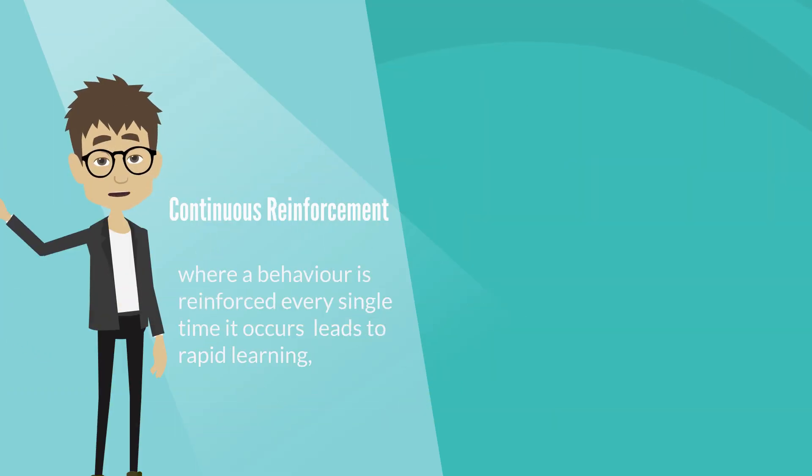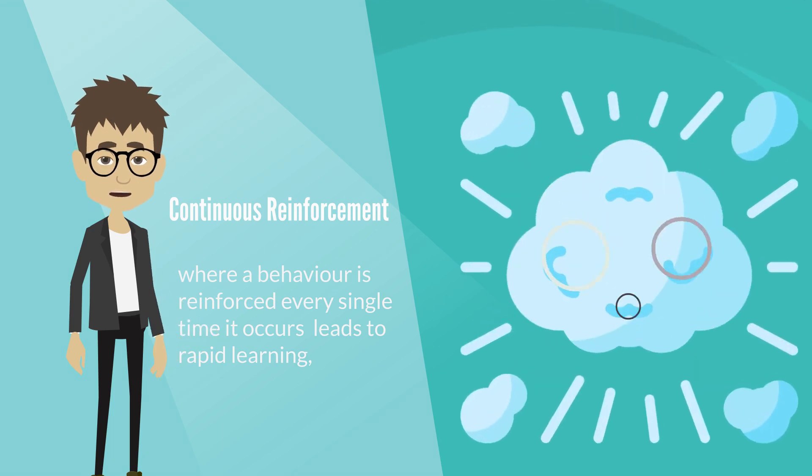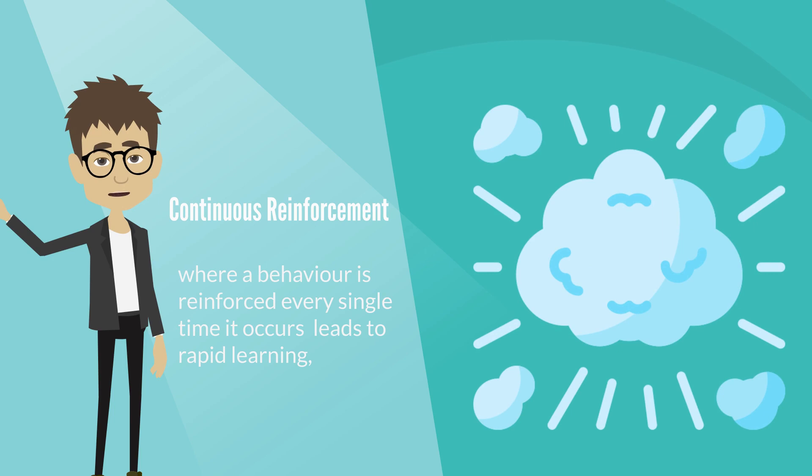For instance, continuous reinforcement, where a behavior is reinforced every single time it occurs, leads to rapid learning, but it can also result in the behavior quickly disappearing once reinforcement is no longer provided.